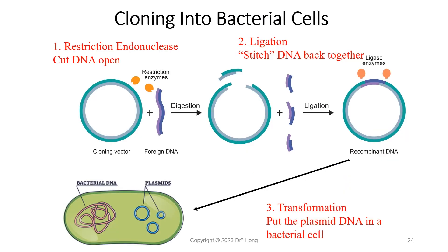Here is the beginning of cloning a gene into a bacterial cell. First, we have a cloning vector — usually a plasmid DNA — and a piece of foreign DNA that is treated with restriction endonucleases. This does two things: it cuts out the gene of interest and also cuts open the cloning vector. After mixing these together in a small test tube, the enzyme ligase is added to perform ligation, stitching the DNA back together to form a recombinant DNA plasmid. The third step is to transfer that recombinant DNA plasmid into a bacteria cell, where the plasmid DNA is separate from the bacterial genomic DNA.